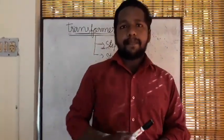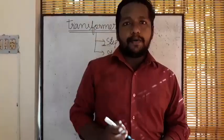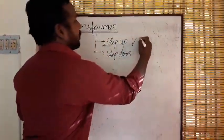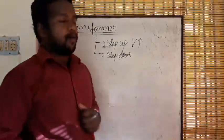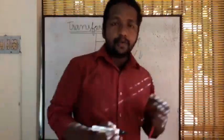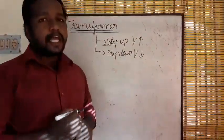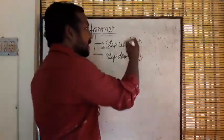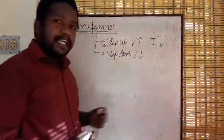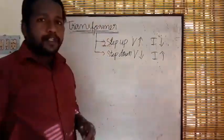One is step-up and the other is step-down. The word itself represents up and down. Step-up means the increasing of voltage, and step-down means the decreasing of voltage. When we increase the voltage, the current will get decreased, and when we decrease the voltage, the current will get increased.